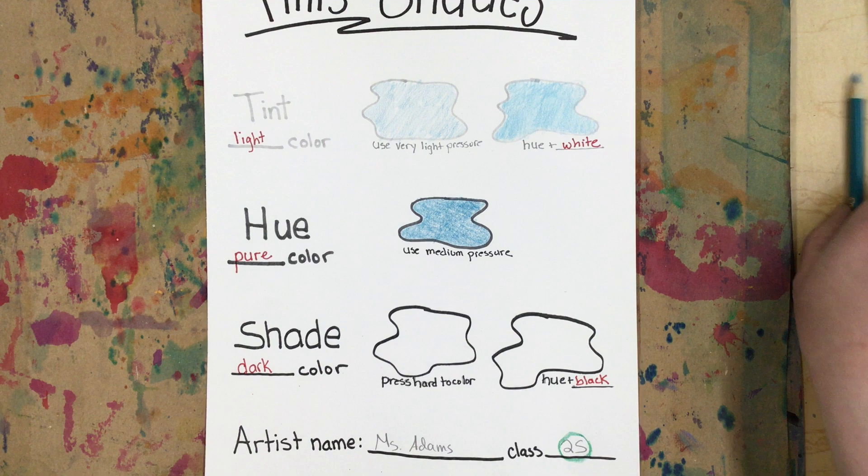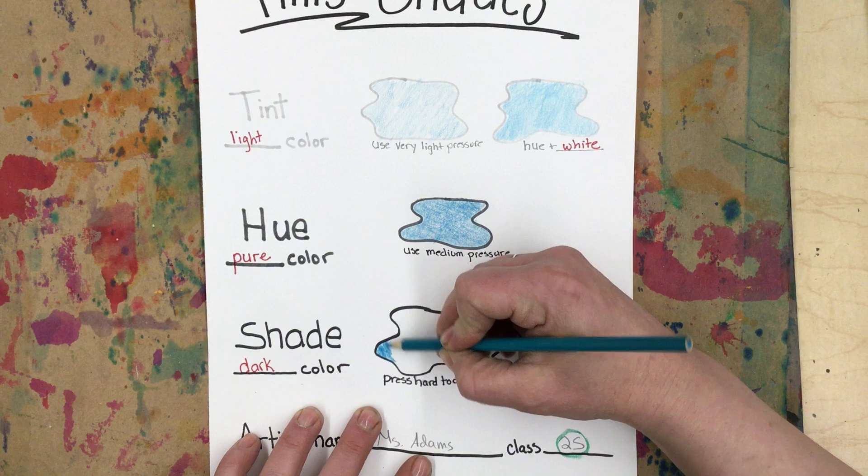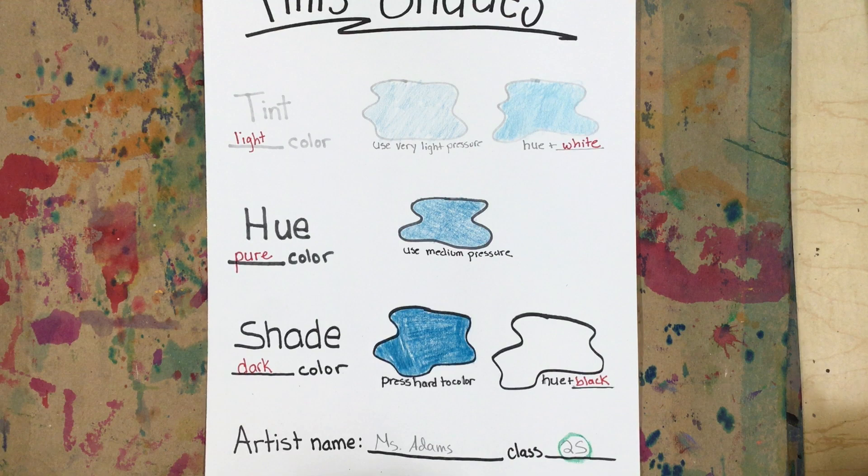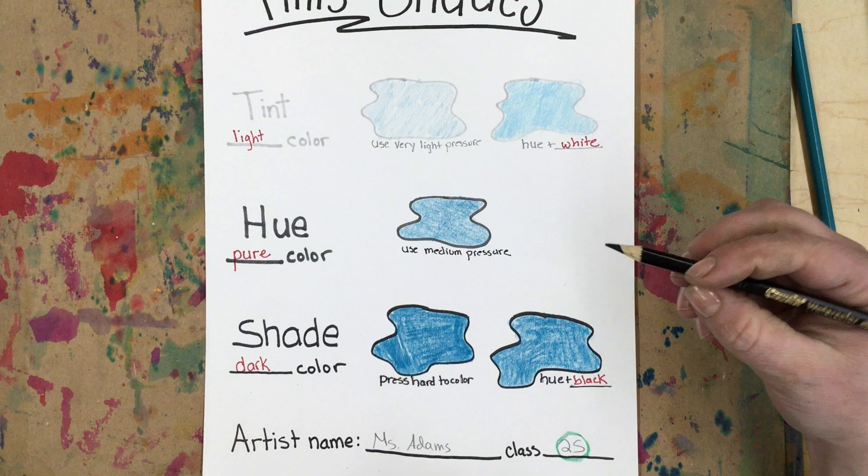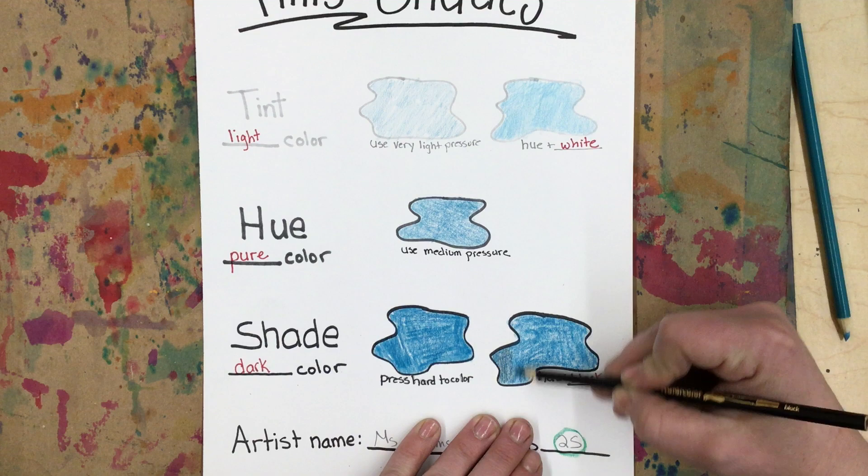You can try making a shade by pressing hard when you color the shape. You can also color the hue pressing hard, then add black over top. Black is a very powerful color, so you only need a little bit to start. You can always add more later, but you can't take it away if you put on too much.